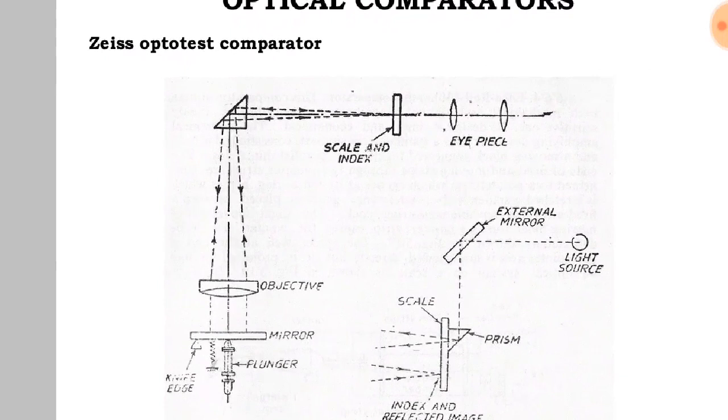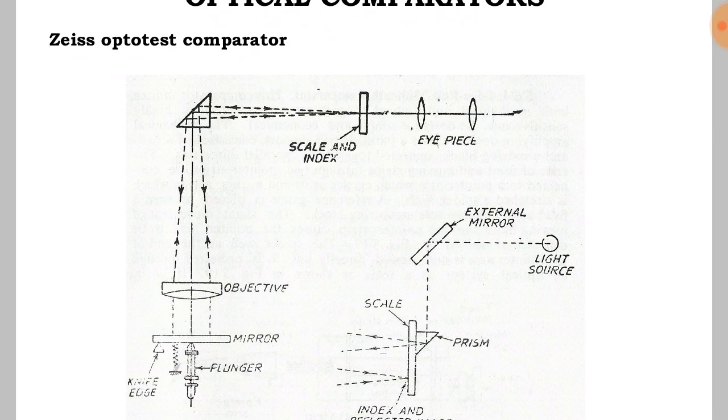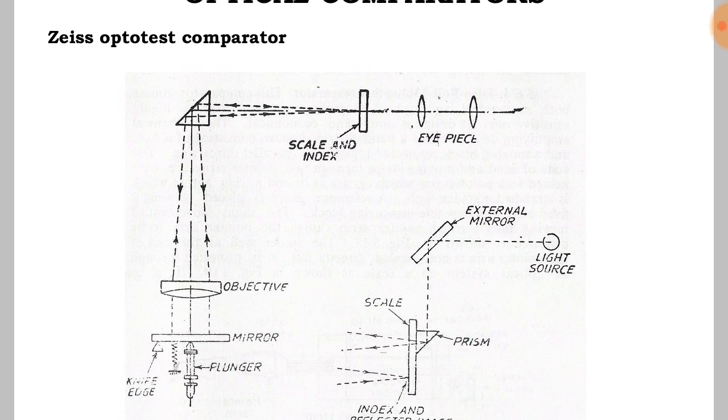It consists of a plunger, objective lens, prism, external mirror, light source, and index. The reflected image can be viewed on the mirror.